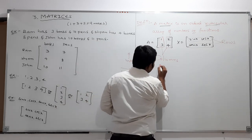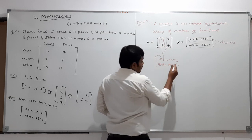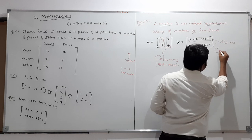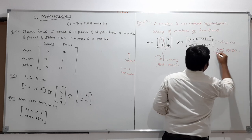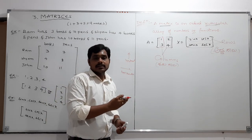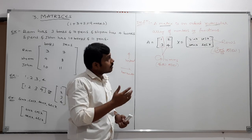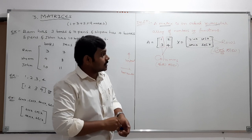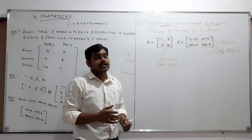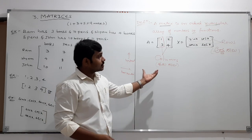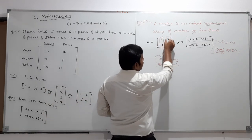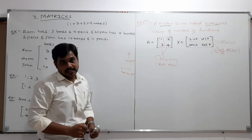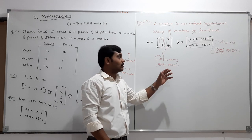In Kannada, columns can be called 'Kambasalu' and rows can be referred to similarly. I am using Kannada in between because many videos use only English or Hindi, but for students who don't know Hindi it may not be easy to understand. So please remember: the vertical lines constitute the columns and the horizontal lines constitute the rows — this is very important for further study.